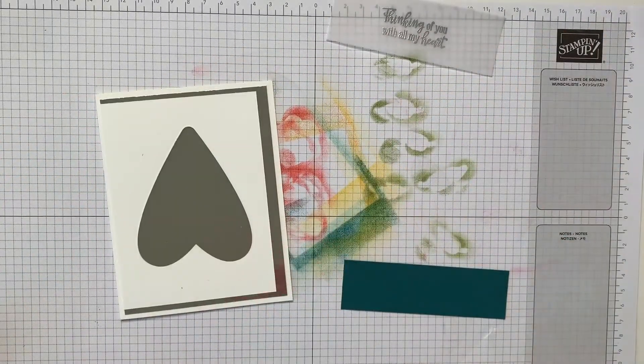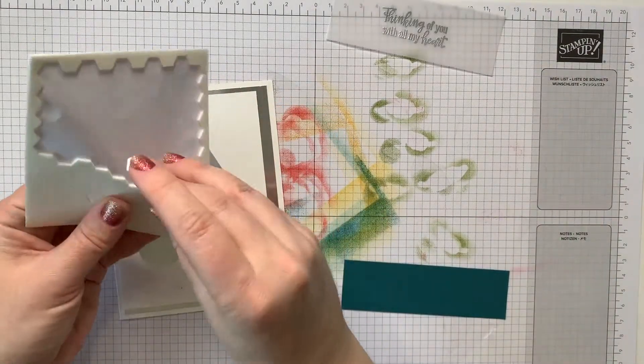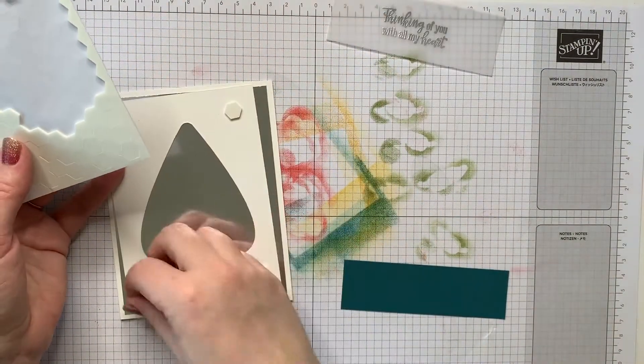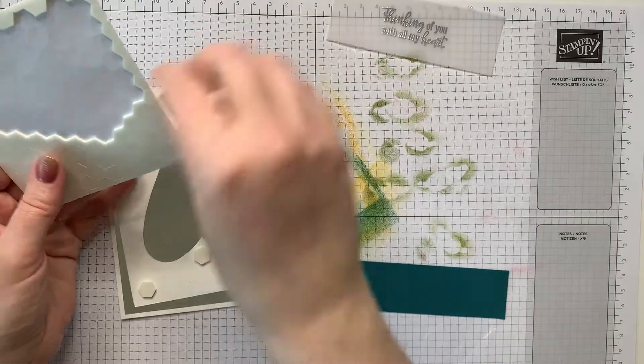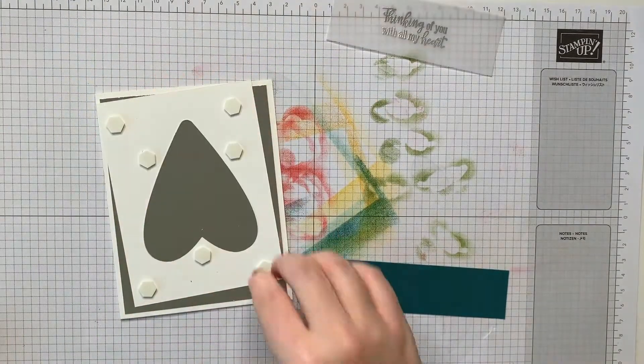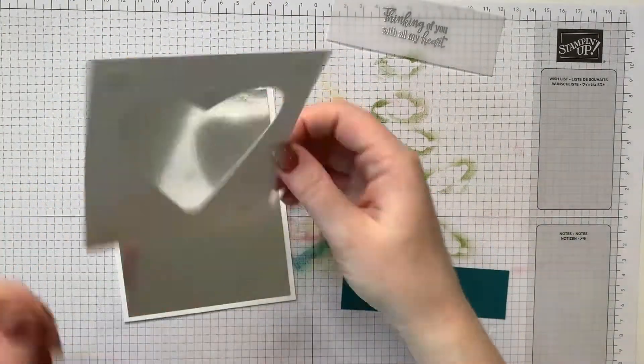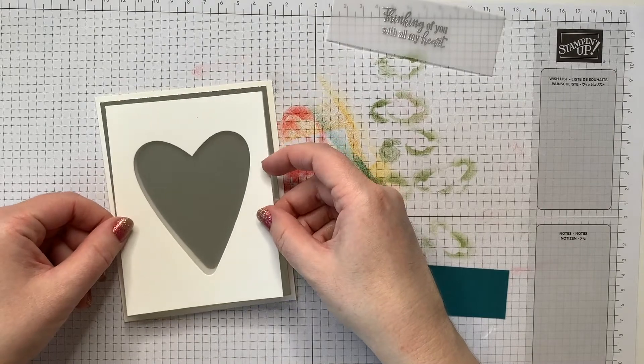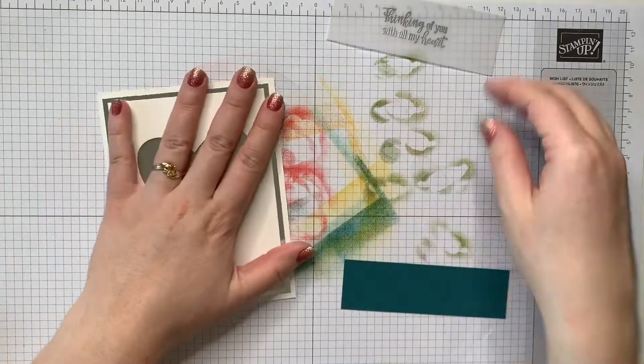And then I'm going to pop up my cutout heart mat with some dimensionals that's going to go right on top of the silver foil and then I'm going to layer on my piece of pretty peacock and the vellum strip on top.